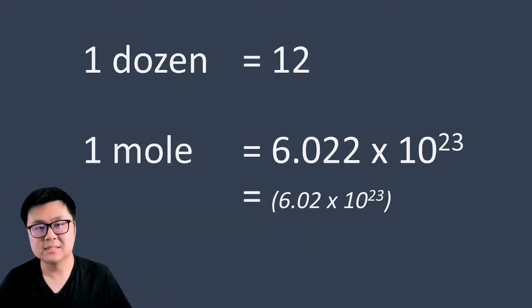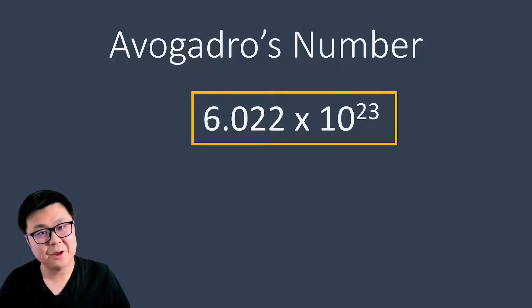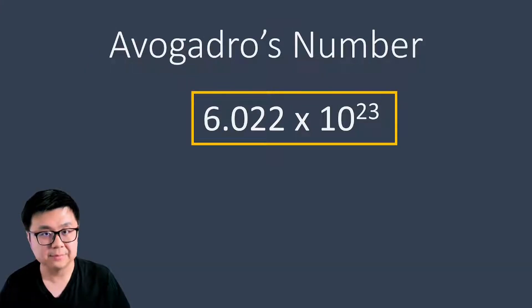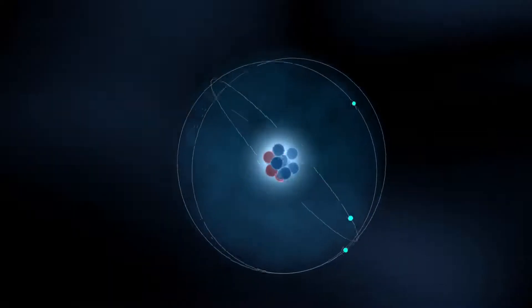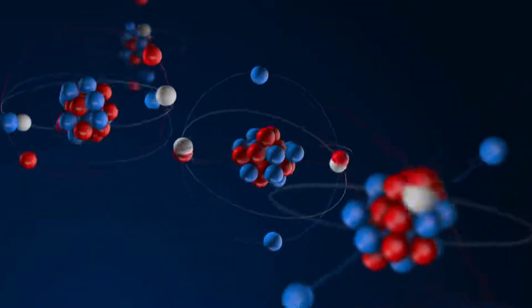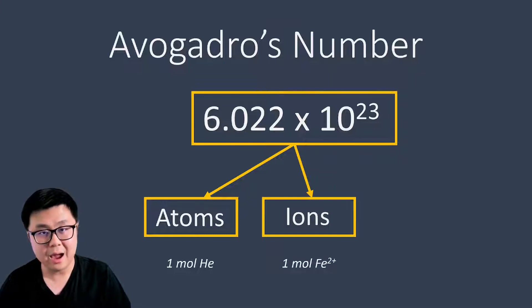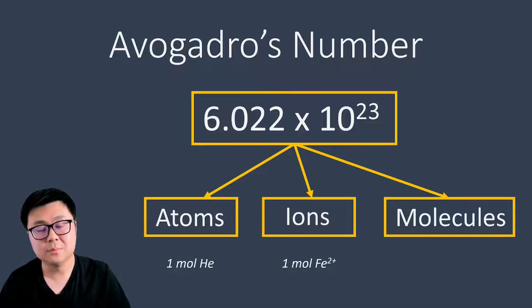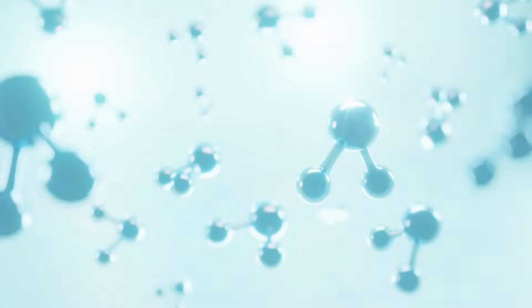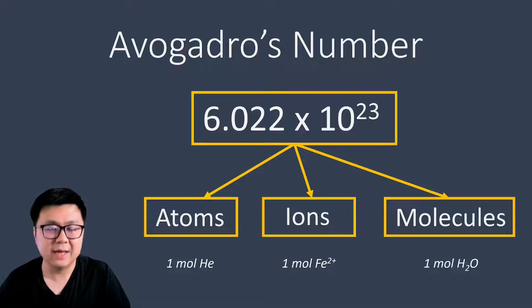This number has a name — it was discovered by a scientist named Avogadro, so we call it Avogadro's number. You're only going to use Avogadro's number when describing one of three things: atoms, which is a single element on its own — for example, one mole of helium; ions, which is a charged version of an element — for example, one mole of iron ions; and molecules, which is two or more atoms joined together — for example, one mole of H₂O or water.